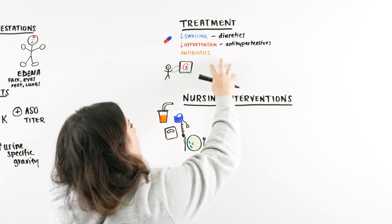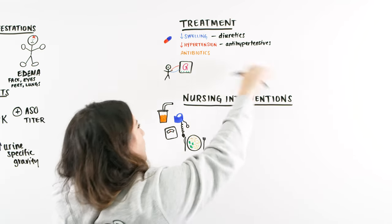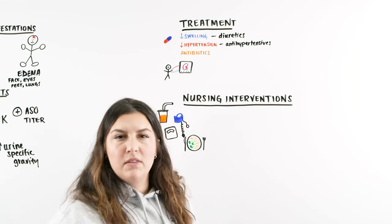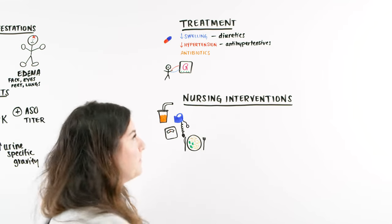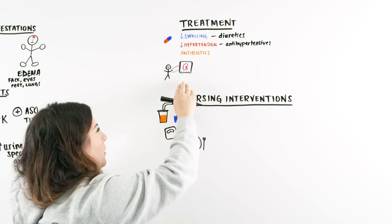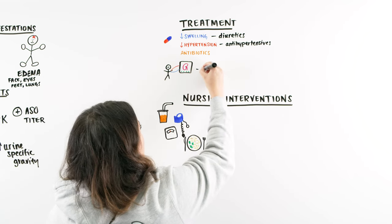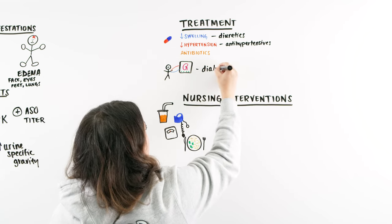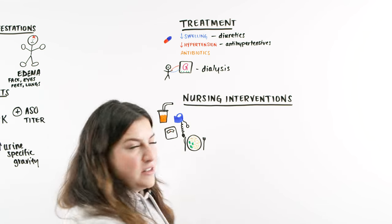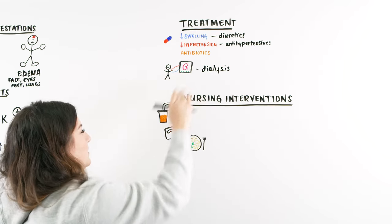Overall, the main things we're correcting in this patient are getting that fluid off, making sure antihypertensives are working for blood pressure, and giving any other supplemental things they need. If the kidney damage is advanced enough that they need dialysis, that is an option — it can be temporary or a little longer, and it depends on the patient.